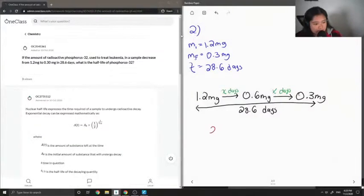So all I'm going to do is take 28.6 days and then I'm going to divide that by 2, since I know that this process happens twice. And that's going to give us x.